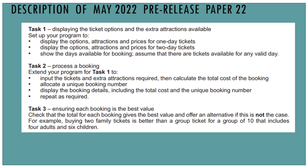Extend your program for task 1 to input the tickets and extra attractions required, then calculate the total cost of the booking. Allocate a unique booking number. Display the booking details. And finally repeat as required.